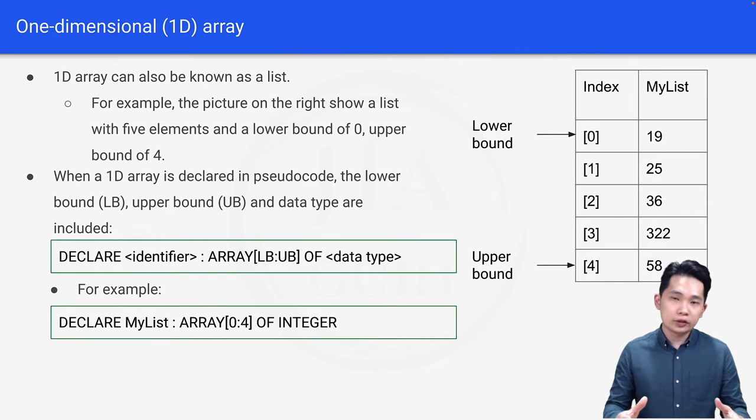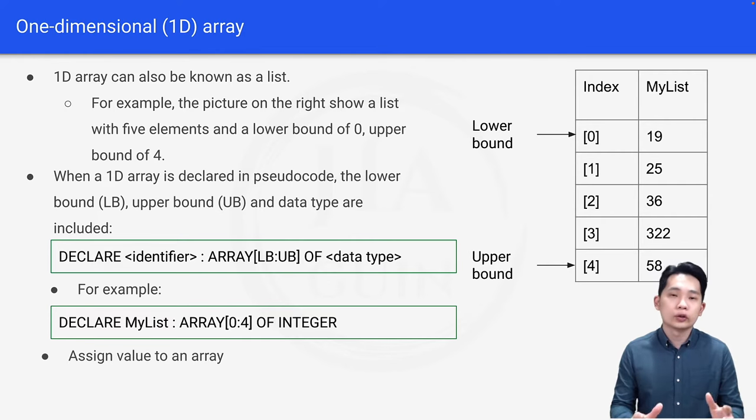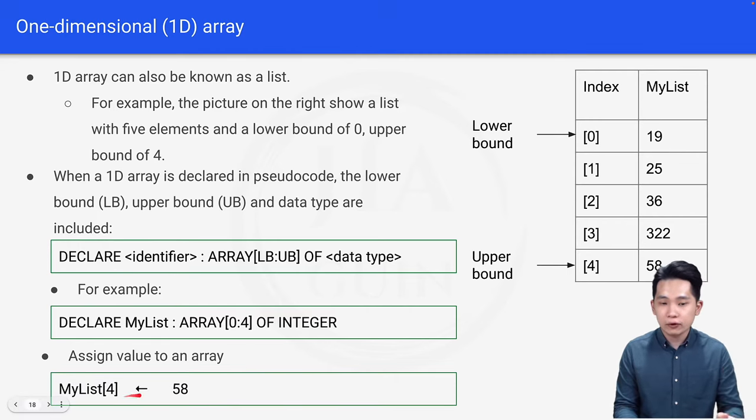And next, after creating the empty array, we have to assign value to each element in an array. So how do you assign a value to an array? It's actually quite simple. What you do is MyList[4] ← 58. So what we do here is we put the name first, which is MyList.